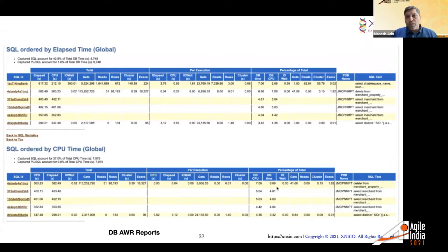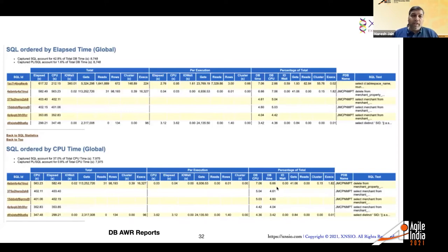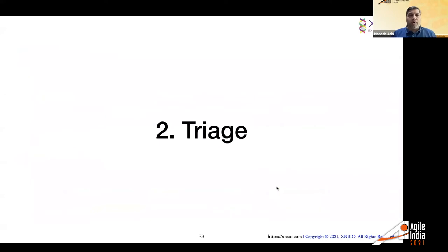On the database side, there are tools like AWR reports that can tell you about slow queries, problems with your indexes, and other kinds of problems. AWR reports available in most tools can give you insights on whether you have debt accumulating on the database side. These are just a few examples of various things to look at to help you visualize the kind of tech debt you have and build a business case around it.